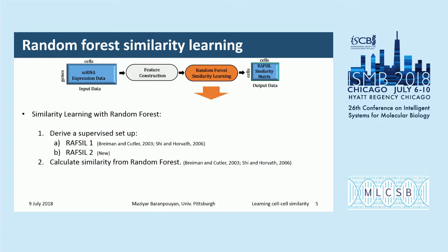The second phase includes two steps: deriving a supervised setup from our problem, then using either RAFSIL-1 or RAFSIL-2. Since random forest is a supervised method but our problem is unsupervised, we need to answer how to use random forest. We generate our random forest and then calculate similarity from it.